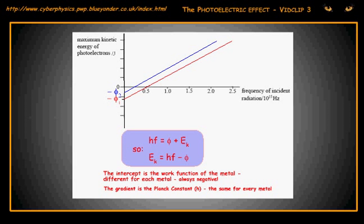Examiners like to give you questions relating to this graph. They might ask you to calculate the gradient and comment on the value that you have obtained. You would need to show in your answer that you knew that the gradient should be the Planck constant and compare the value that you calculated with the value given on your datasheet.